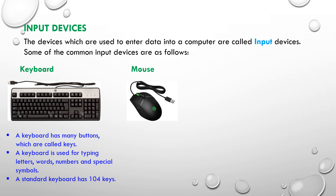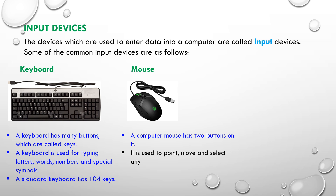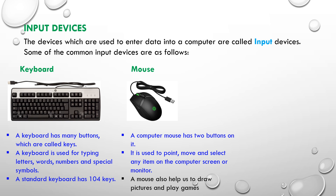Mouse. A computer mouse has two buttons on it. It is used to point, move, and select any item on the computer screen or monitor. A mouse also helps us to draw pictures and play games.